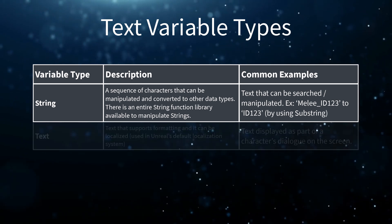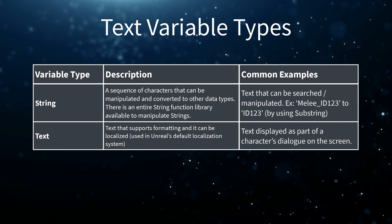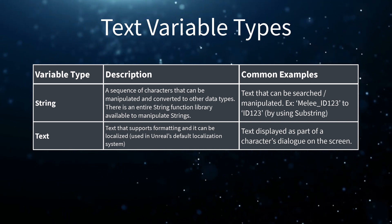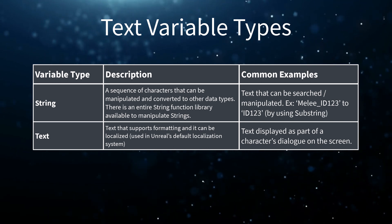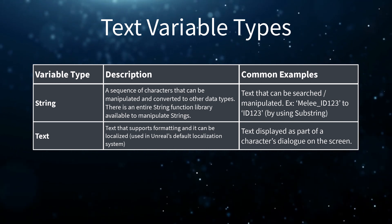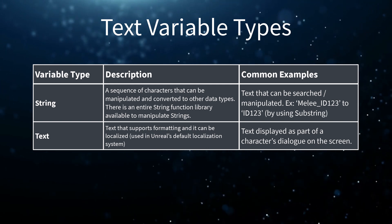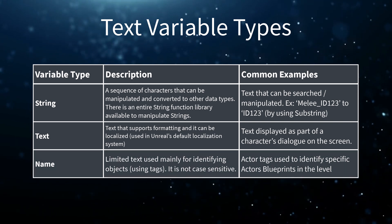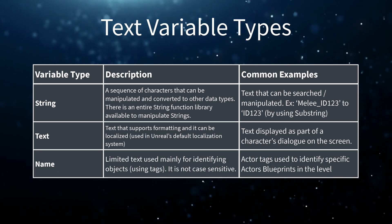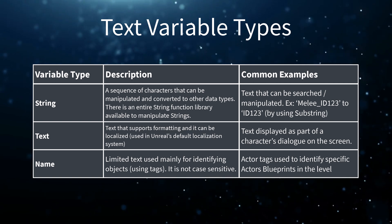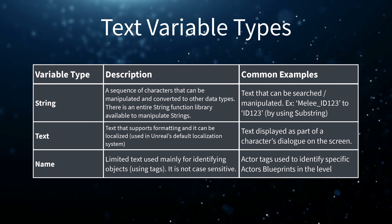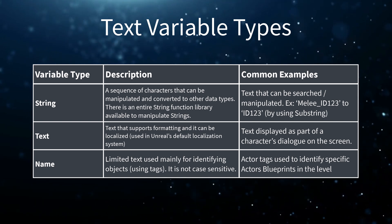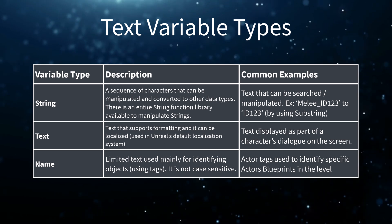Then we have the text variable. Text supports formatting and it can be localized by using Unreal Engine's default localization system. An example could be any text that is displayed as part of a character's dialog on the screen. And finally, we have the name. A name is limited text used mainly for identifying objects by using tags. It is not case sensitive. An example would be the typical actor tags used to identify specific actor blueprints in the level.